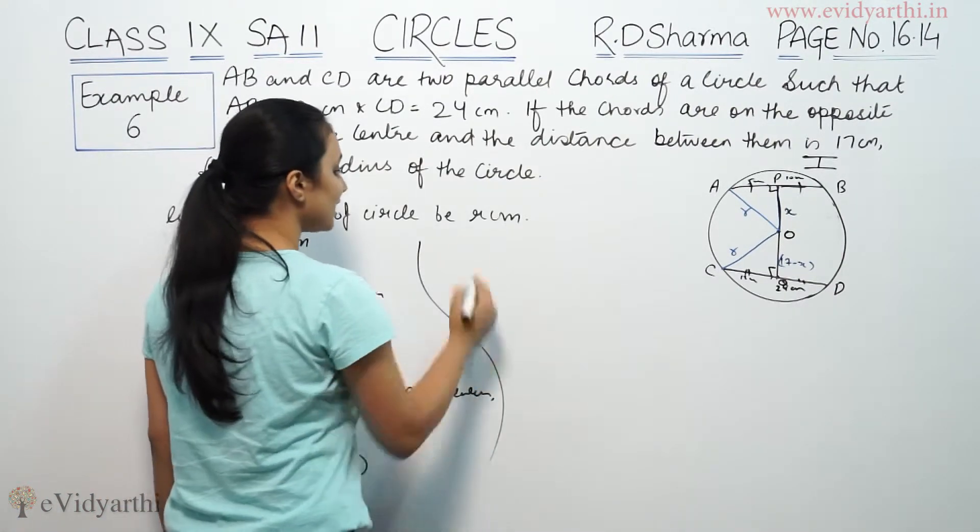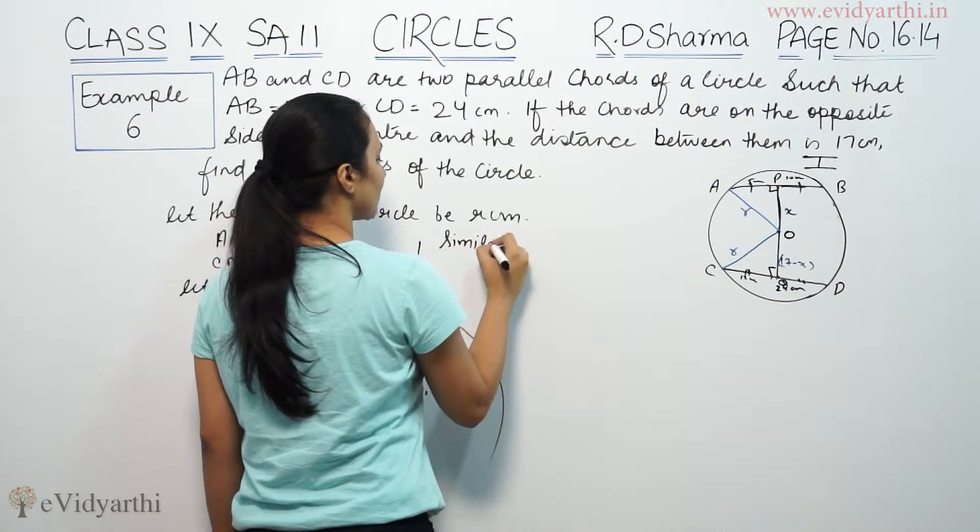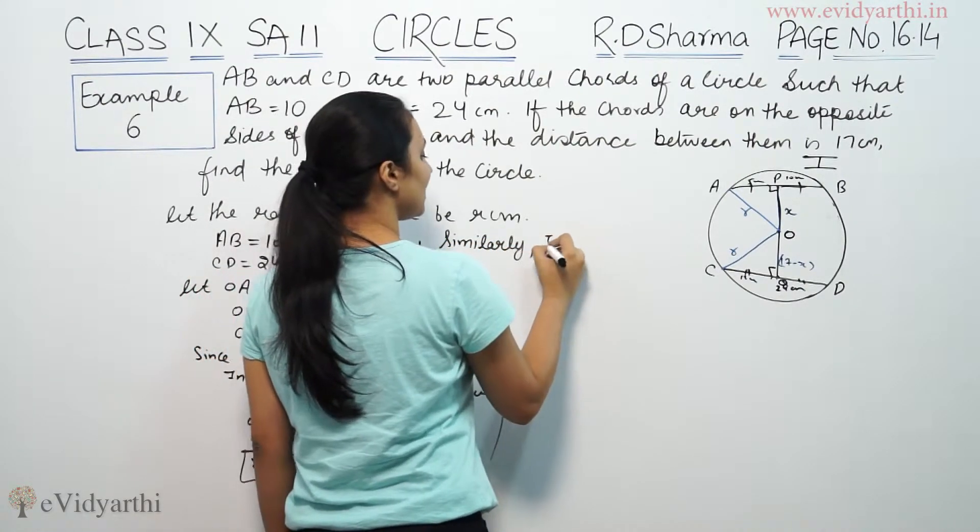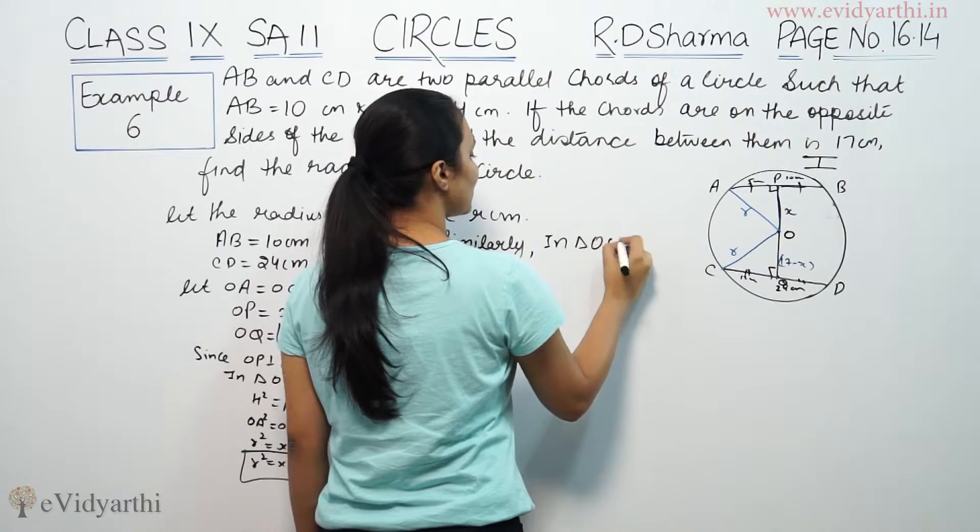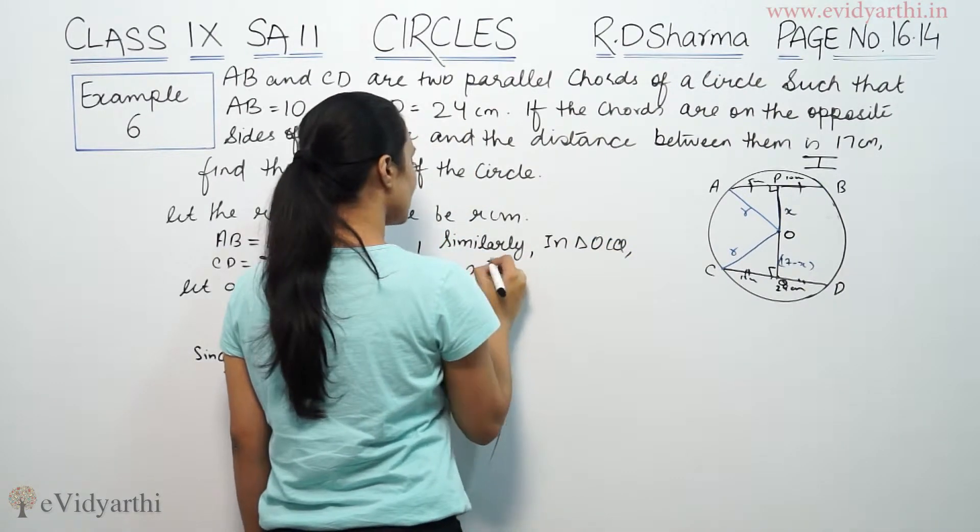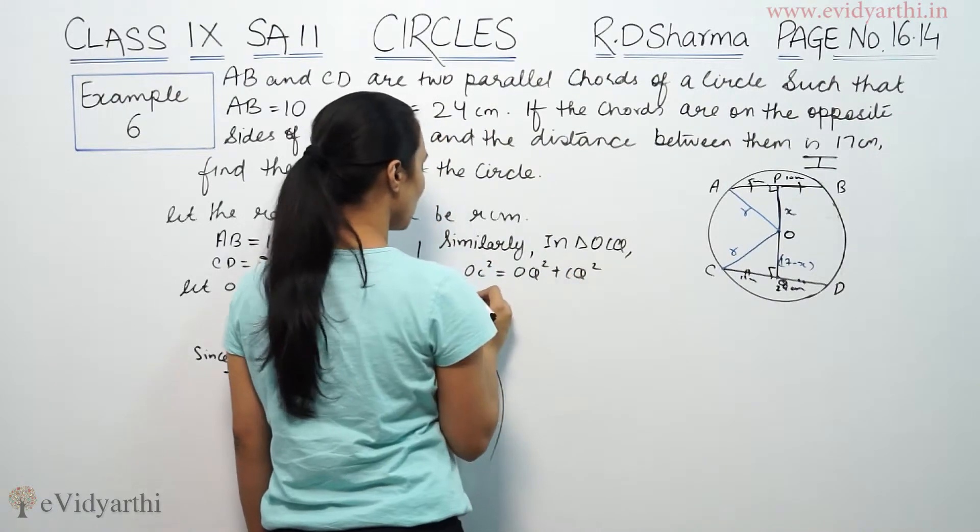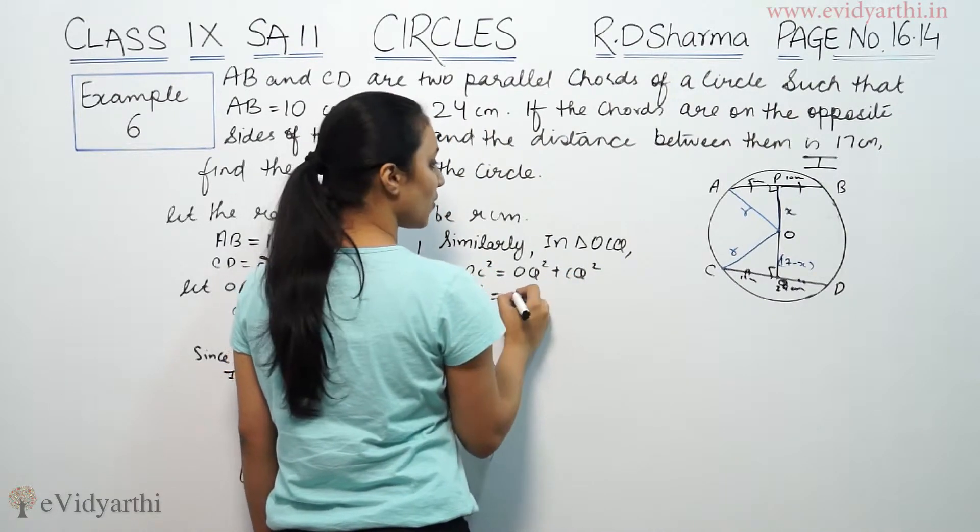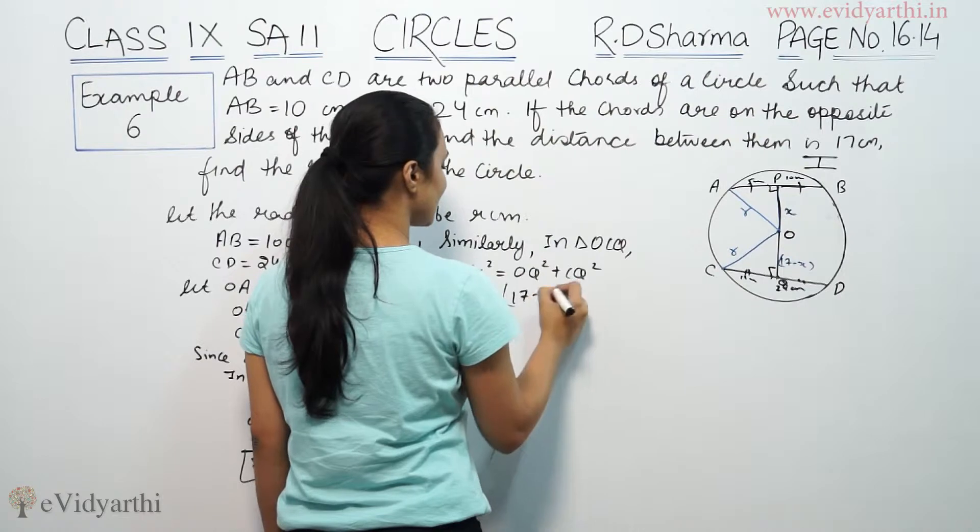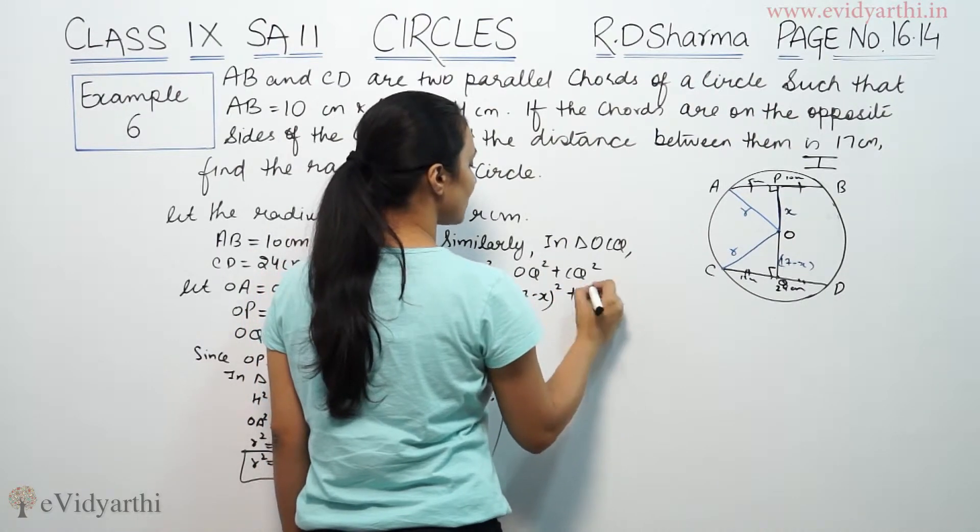Similarly in triangle OCQ, OC square equals OQ square plus CQ square. So OC is r square, OQ is 17 minus x whole square, and CQ is 12 square.